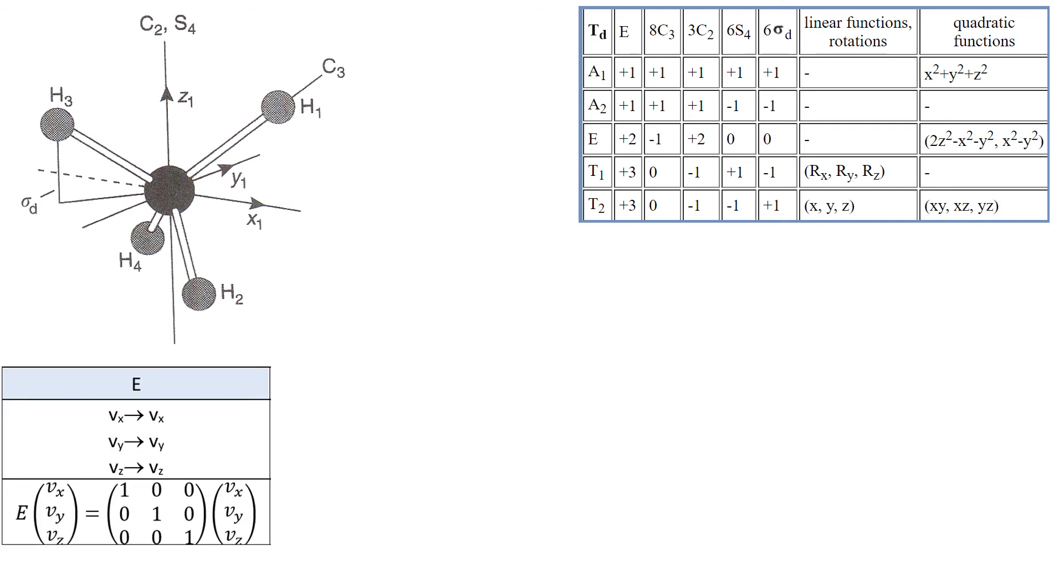Let's start with trivial E operation. All three vectors remain unchanged, the character is 3, and that is what we see under E operation for any T representation. Because any T representation describes three entities that are linked by symmetry. And I'm sure that you remember from the last video that these three vectors that we perform symmetry operations on are described by T2, not T1 in this case.